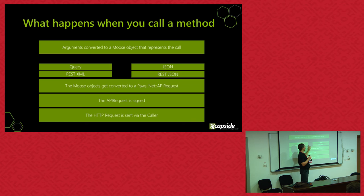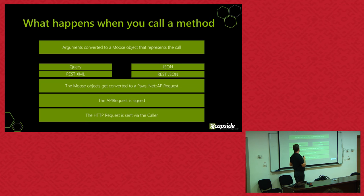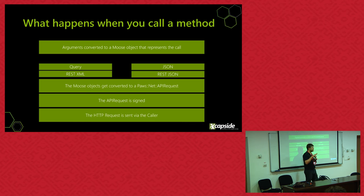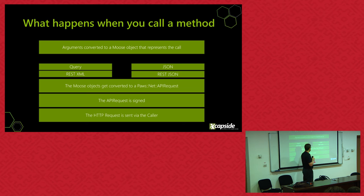Each service type handler will handle each kind of service. The service classes have metadata about which type they are — these are basically roles on each service class. Paws introspects the classes and says 'okay, I'm a query type, I'll do things the query way.' The Moose objects are converted to a Paws::Net::APIRequest — basically the same as an HTTP request with headers, content, and URL, but it's an intermediate object so the implementation doesn't get tied to any specific HTTP library. After that, we take your access key and secret key from wherever they came, sign the request, and send it.